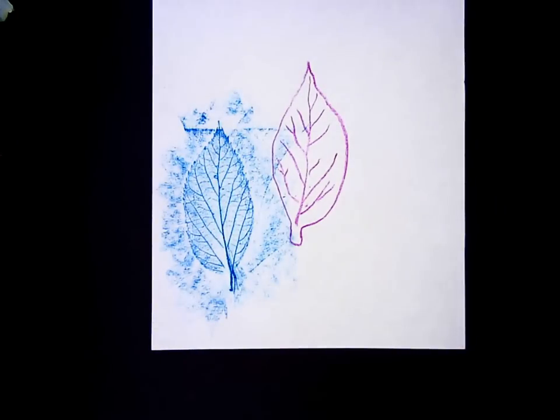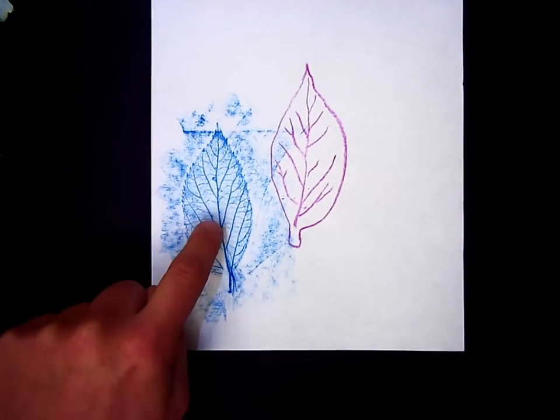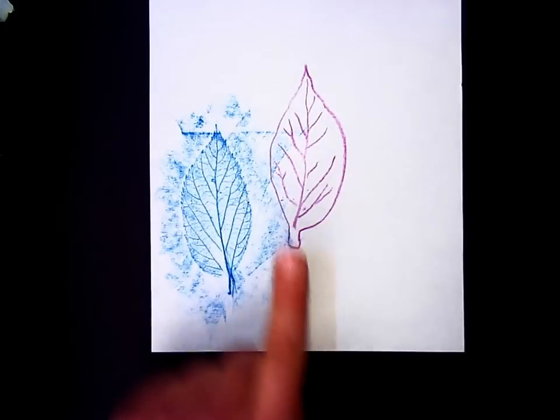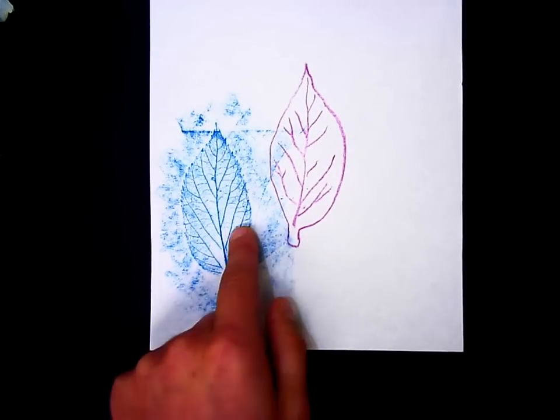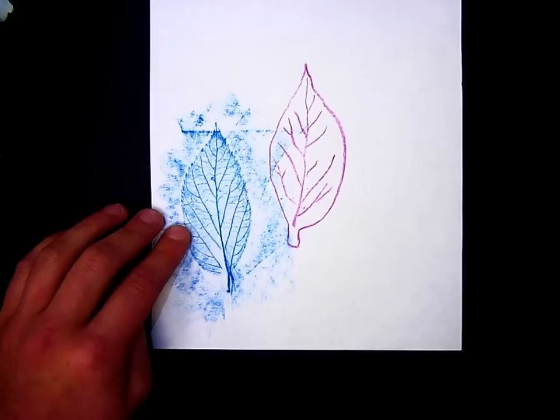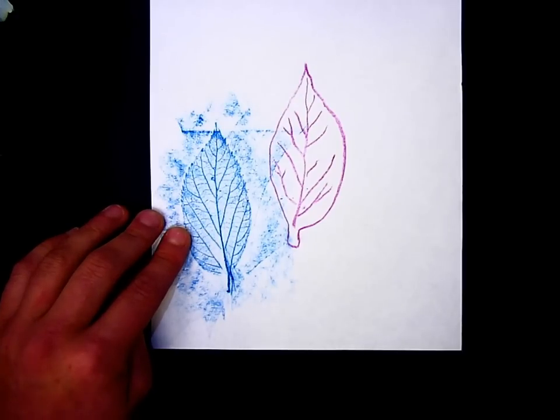Now on your paper you have both a frottage in blue color—colors, the element of art. You also press down and you can see the implied texture of the leaf this way. Texture is an element of art.